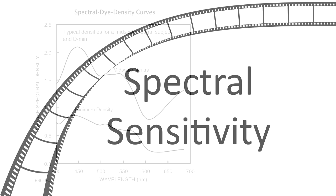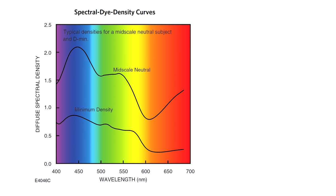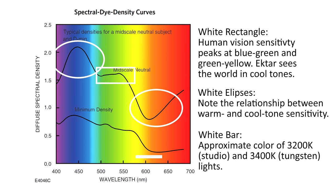Looking at the spectral sensitivity curve, it tells us that Ektar is biased towards cool tones. Note in the curves how much greater the cool tone sensitivity is compared to the warm tones — the higher the point on the curve, the more sensitive the film is to that color. Ektar is more sensitive to cool tones than to greens and yellows. Human sight has peak color sensitivity in the blue-green and yellow-green range, and the green plateau for Ektar means cool tones will prevail if scanned neutrally.